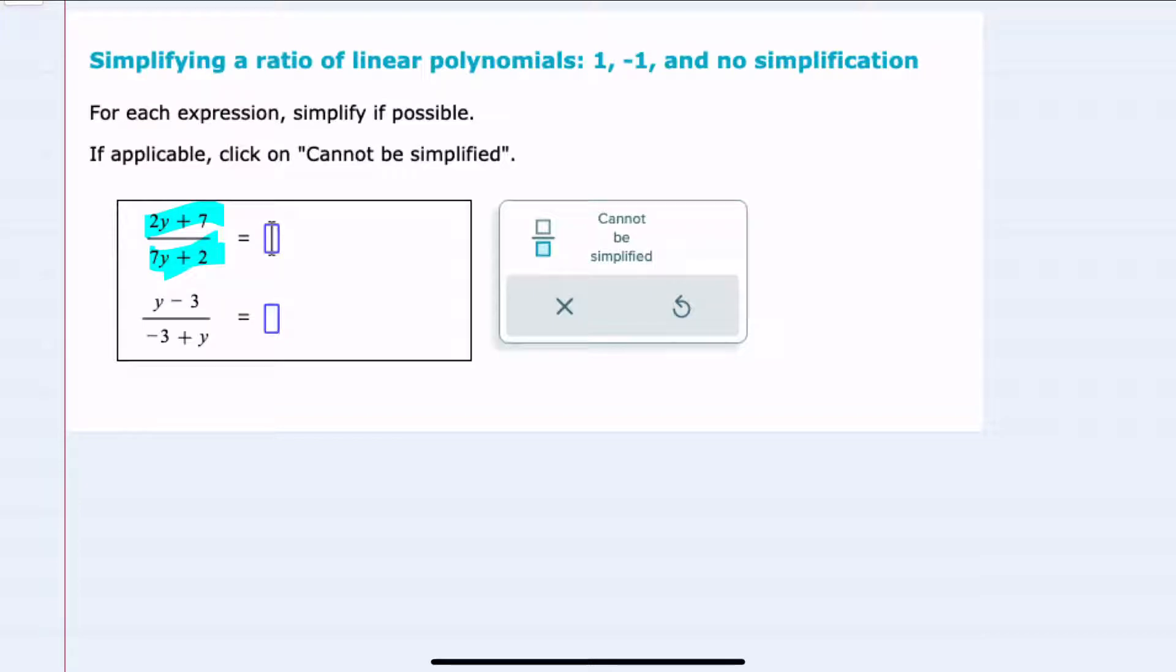Like factoring out a 2 from the top and factoring out a 2 from the bottom. If possible, I could then cancel those 2s.